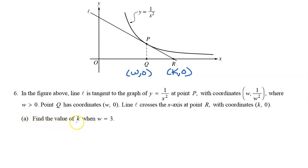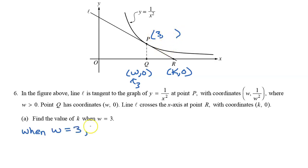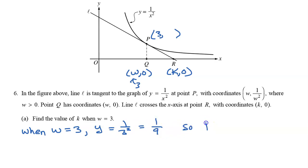Part A says find the value of k when w is equal to 3. So if w equals 3, then point P is 3 comma something. The y value will be 1 over 3 squared, which is 1 over 9. So point P is the point 3 comma 1/9.